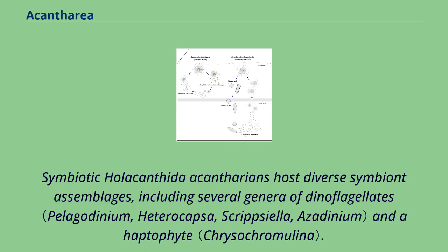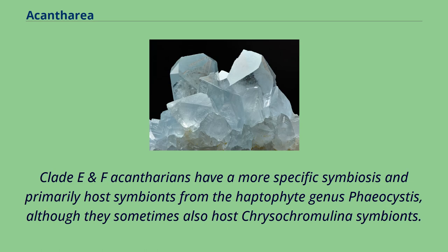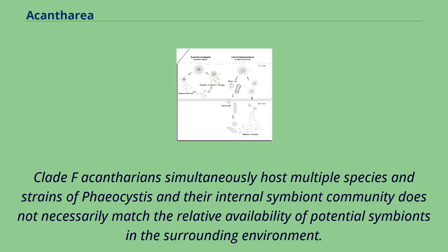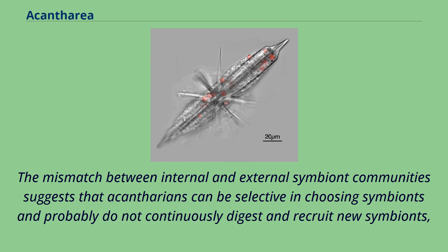Clade E acantharians have a more specific symbiosis and primarily host symbionts from the haptophyte genus Phaeocystis, although they sometimes also host Chrysochromulina symbionts. Clade E acantharians simultaneously host multiple species and strains of Phaeocystis, and their internal symbiont community does not necessarily match the relative availability of potential symbionts in the surrounding environment. This mismatch suggests that acantharians can be selective in choosing symbionts and probably maintain symbionts for extended periods rather than continuously digesting and recruiting new ones.